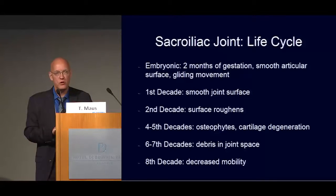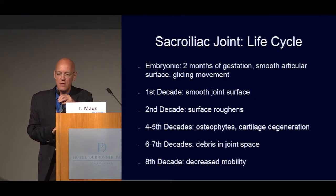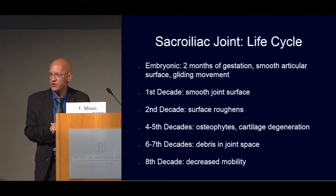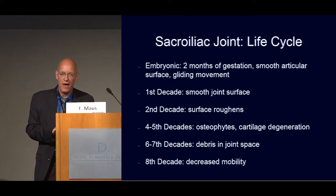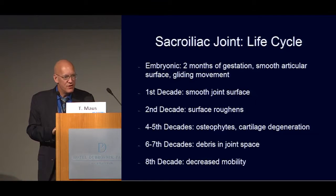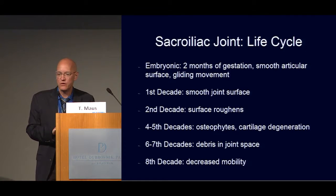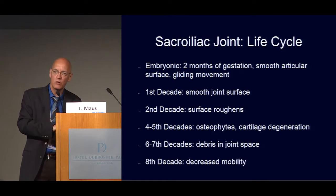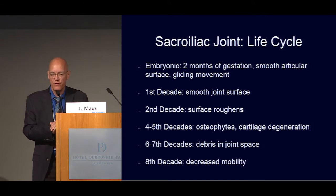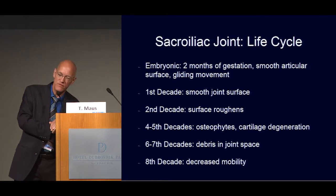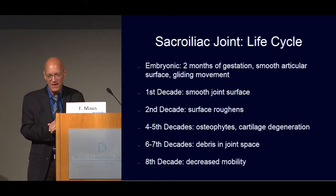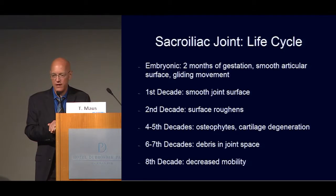The sacroiliac joint undergoes normal change with aging — I prefer to call these aging changes, not degenerative changes, as degenerative implies some pathologic process. In the embryonic state it has a smooth articular surface that persists throughout the first decade. In the second decade that surface roughens. We see development of osteophytes and cartilage degeneration in the fourth or fifth decade, with debris in that joint, and ultimately relatively little mobility by the eighth decade.